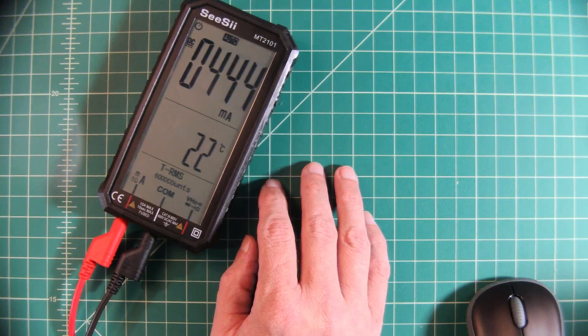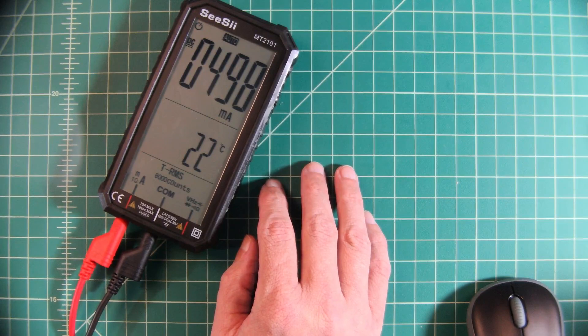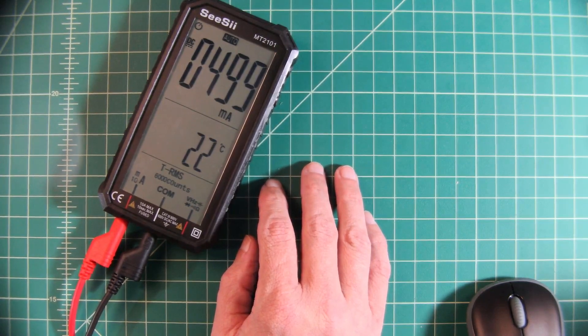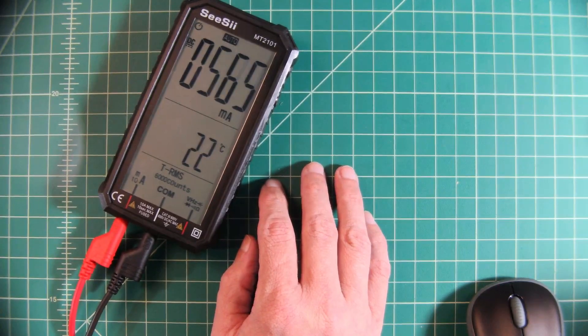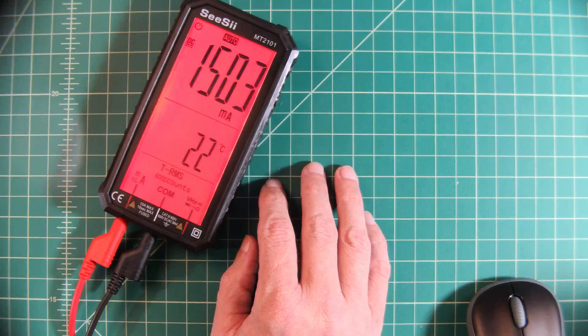And then here you can see that, increasing it, it should be at 0.2 amps or 200 milliamps. Let's keep going. We'll stop at 0.5. There we go. Now that is within specification and let's go ahead and go a little bit higher. Here I get an alert letting me know that I'm starting to measure higher amperage which is pretty handy.